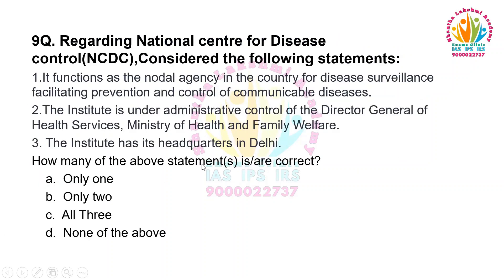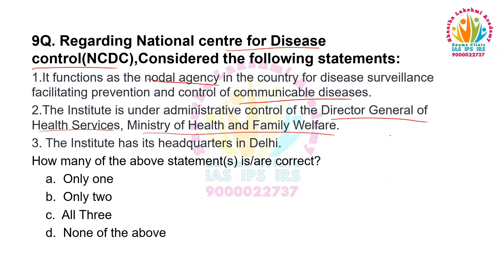Moving to the next question. Regarding the National Centre for Disease Control, consider the following statements. It functions as the nodal agency in the country for disease surveillance, facilitating prevention and control of communicable diseases. The Institute is under the administrative control of the Director General of Health Services, Ministry of Health and Family Welfare. The Institute has its headquarters in Delhi. How many of the above statements are correct? Only one. Only two. All three. None of the above.